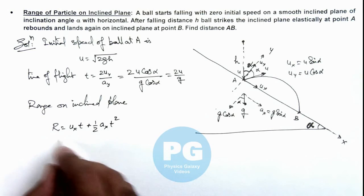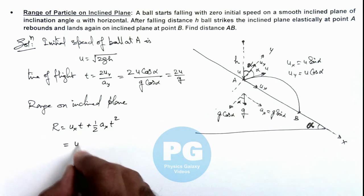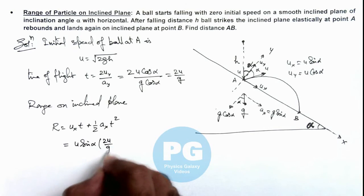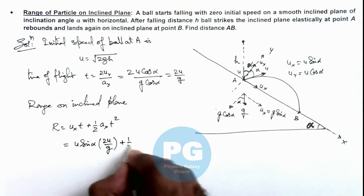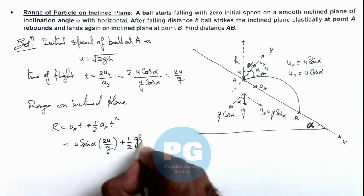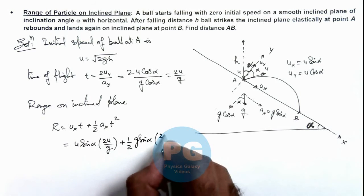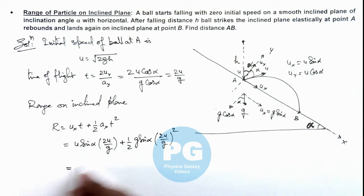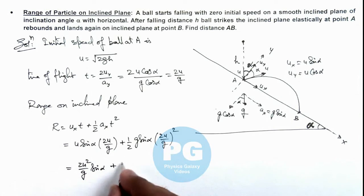If we substitute the values, this is u sine alpha multiplied by 2u by g, plus half a_x, which is g sine alpha, multiplied by (2u by g) whole squared. If we simplify this, this will give us 2 u squared by g sine alpha, plus here also it will become 2 u squared by g sine alpha. So this will be 4 by g...